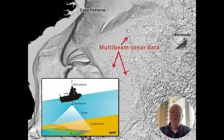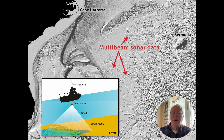GEBCO consists of two main types of data. Multi-beam sonar is the most detailed and accurate. These data are collected in narrow swaths by ships towing sonar equipment. Data collection is very slow. Presently, only 25% of the world's ocean floor is mapped with multi-beam sonar, most of it in the Northern Hemisphere near the United States, Europe, and Japan.